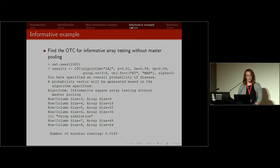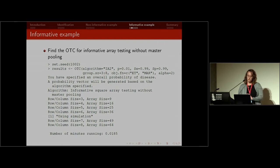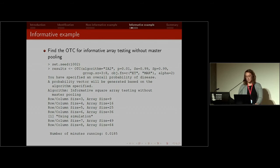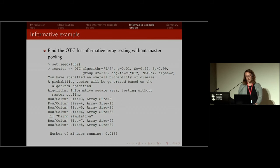For this example, you'll want to set a seed when using informative array testing, because you're using the beta distribution to generate probabilities and need to reproduce results — sometimes simulation is needed based on the probability or group size specified. The algorithm is IA2, informative array testing. We specify the probability, sensitivity, and specificity. Just for fitting on a slide, I included group sizes three to eight, and objective functions ET and MAR. The output is similar to the non-informative case.